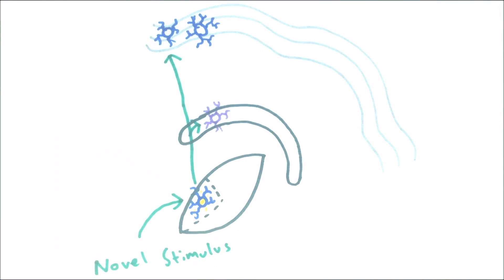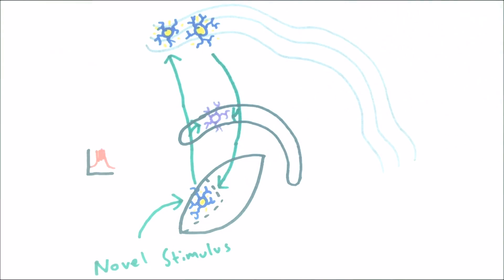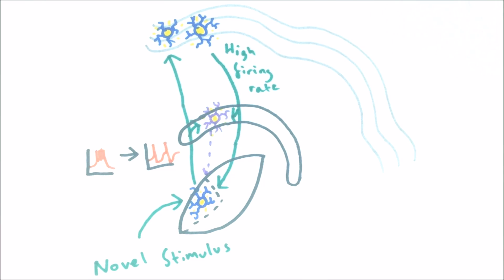This has led to the wake-up call theory of thalamic function. Initially, a novel stimulus triggers bursting of thalamic neurons, which strongly activates an area of cortex, directing the animal's attention towards the new stimulus and signalling that it is important. The strong activation of cortical cells allows them to feedback with higher frequency to the thalamus, exciting thalamic neurons and switching them from burst mode to tonic mode. Tonic mode then allows relay neurons to subsequently convey information about the new stimulus more accurately, allowing it to be analysed by the cortex in detail.